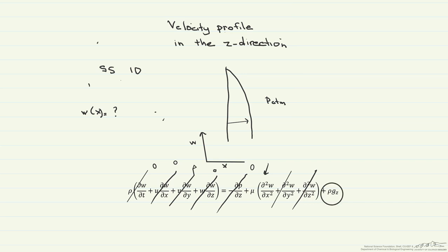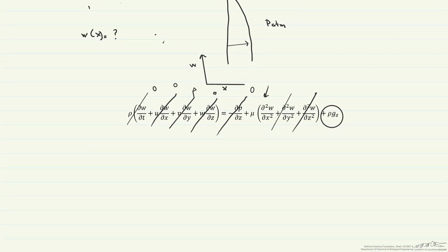Our gravity is in the negative z-direction, so what we're going to be left with here is that zero is equal to minus rho density times the gravity in the z-direction plus mu, the viscosity, d squared w dx squared. And we can write this as d squared w dx squared equals rho g sub z divided by mu.